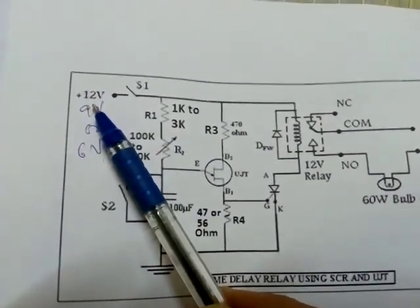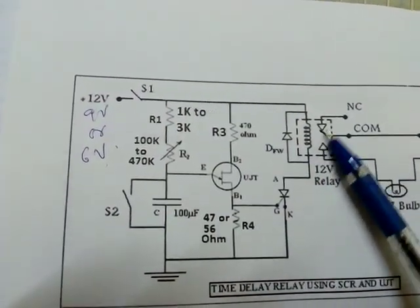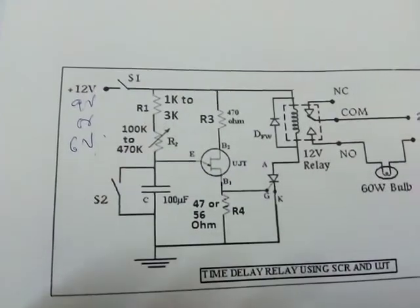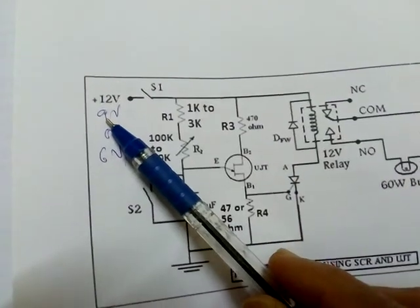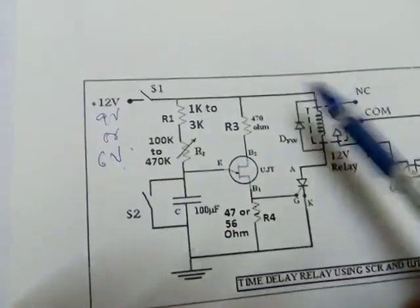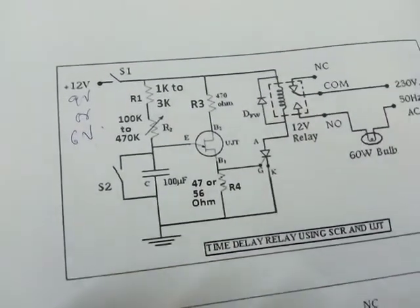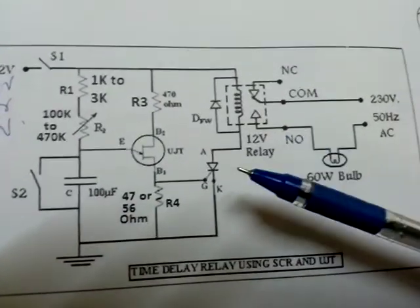Another 1V can be given because sometimes the relay contacts get jammed. That is why, if it is 6V, you can go up to 8V. If it is 9V, you can go up to 11V. After doing the connections, to check how much voltage the relay is.